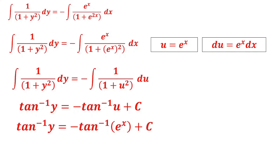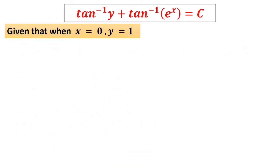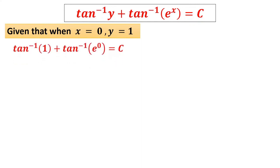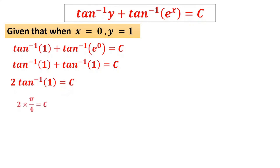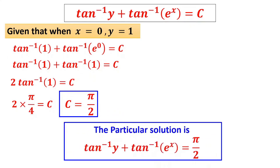Re-substituting u = e^x: tan⁻¹y = −tan⁻¹(e^x) + c, which gives tan⁻¹y + tan⁻¹(e^x) = c. For the particular solution, it is given that when x = 0, y = 1. Substituting: tan⁻¹(1) + tan⁻¹(e^0) = c → π/4 + π/4 = c → c = π/2. Therefore the particular solution is tan⁻¹y + tan⁻¹(e^x) = π/2.